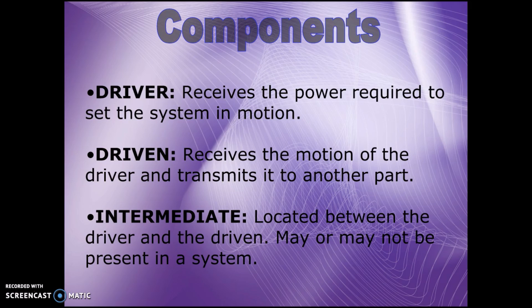So to recap, the components in a technological or mechanical system are the driver, which receives the power required to set the system in motion; the driven or follower, which receives the motion of the driver and transmits it to another part; finally, the intermediate is located between the driver and the driven.